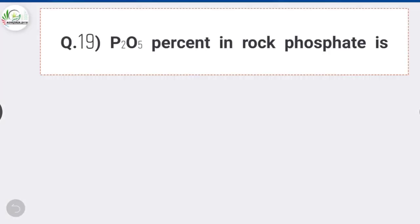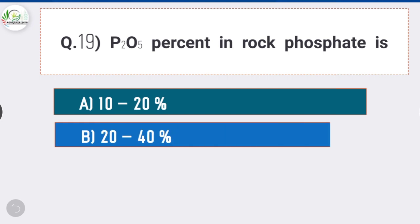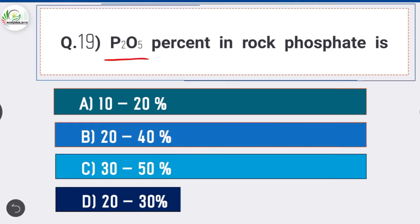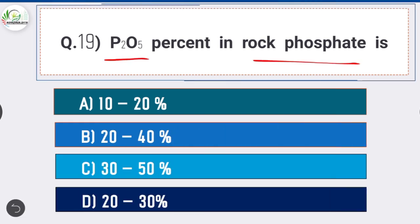Question number 19: P2O5% in rock phosphate is? Answer is option B, 20-40%. 20-40% of P2O5 is present in rock phosphate.